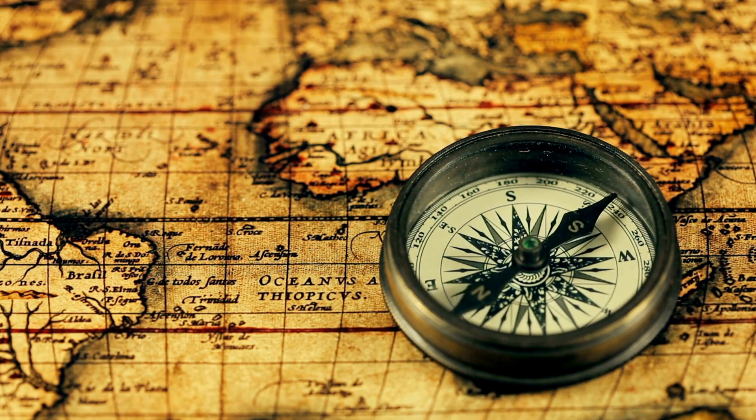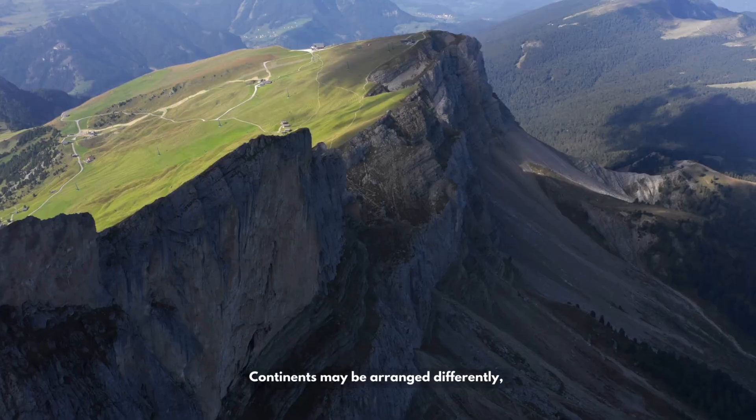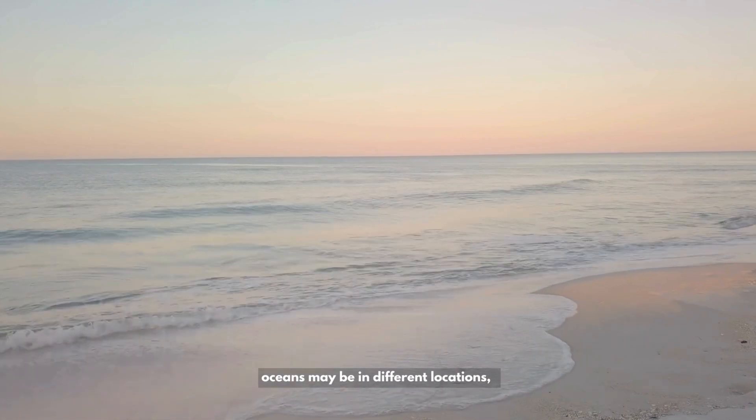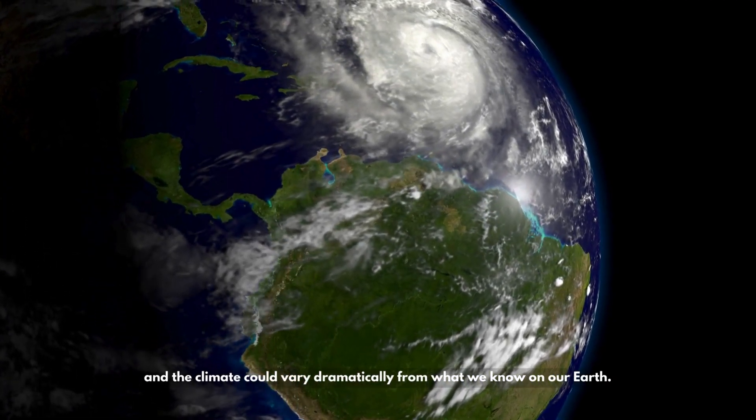Alternate geographies: Parallel Earths could feature entirely different geographical landscapes. Continents may be arranged differently, oceans may be in different locations, and the climate could vary dramatically from what we know on our Earth.